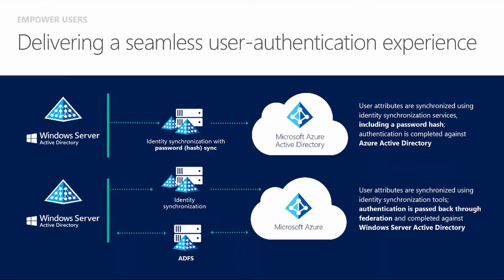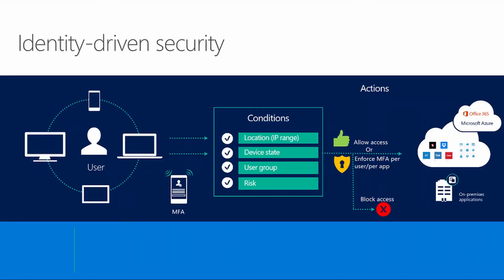Some of the common synchronization tools used are called DirSync or ADSync, which is the latest version of DirSync. This allows you to synchronize a hash of your password up into Azure Active Directory. Other organizations might have the need for Active Directory Federation Services for authentication, which instead of syncing a hash of the password, allows the authentication tokens to come back on-premises. So being that identity is the new focus in security, how can we protect the users and devices in this cloud environment and also on-premises?